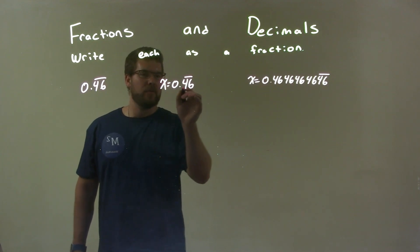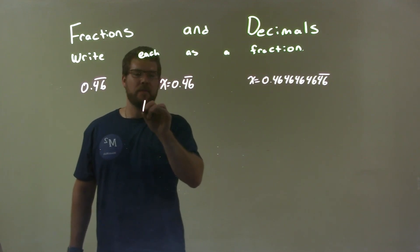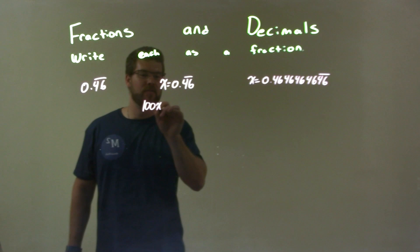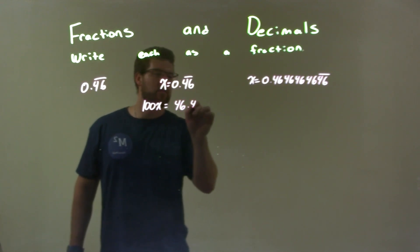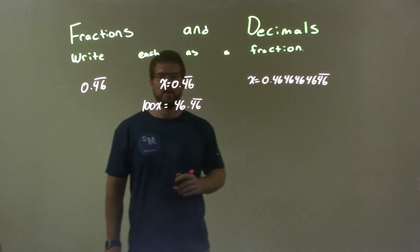Well, I'm going to multiply this by 100. Move the decimal place over two spots, so 100x is 46.46 repeating.